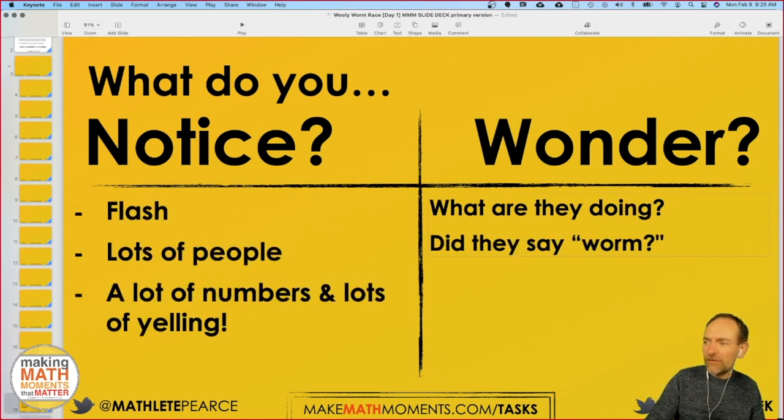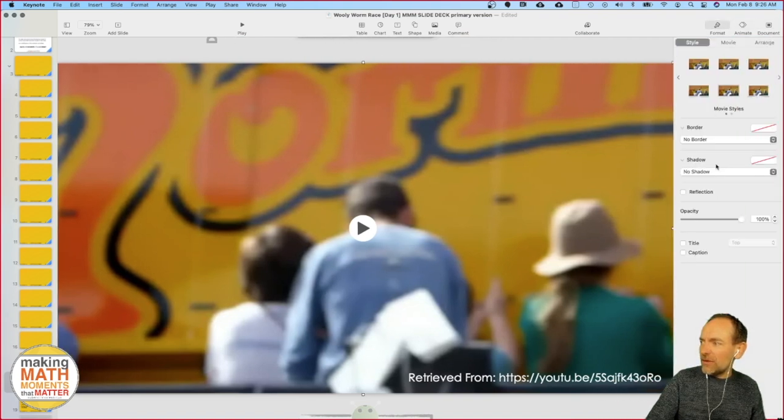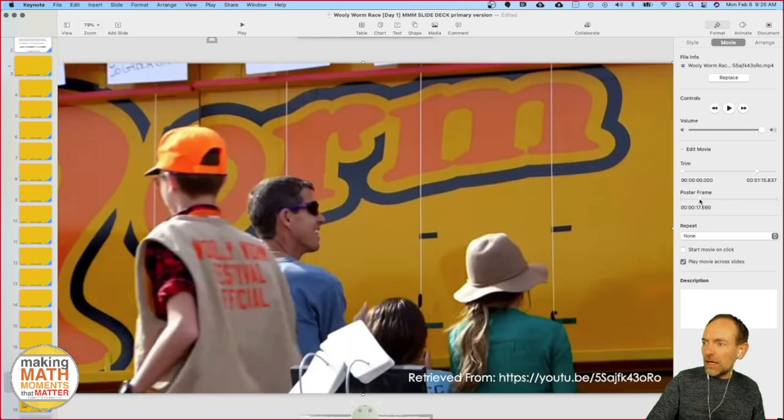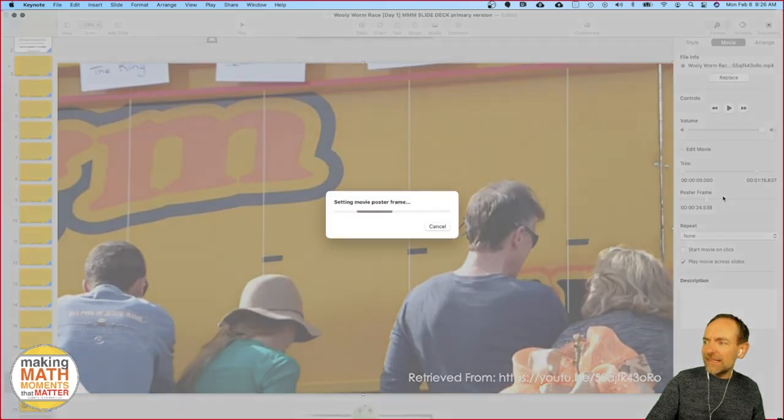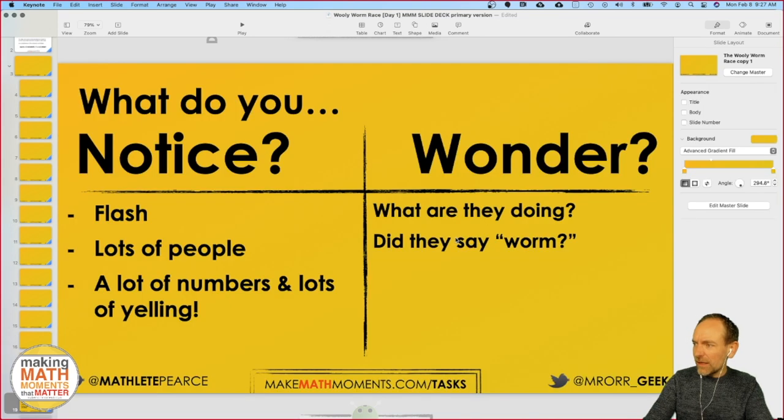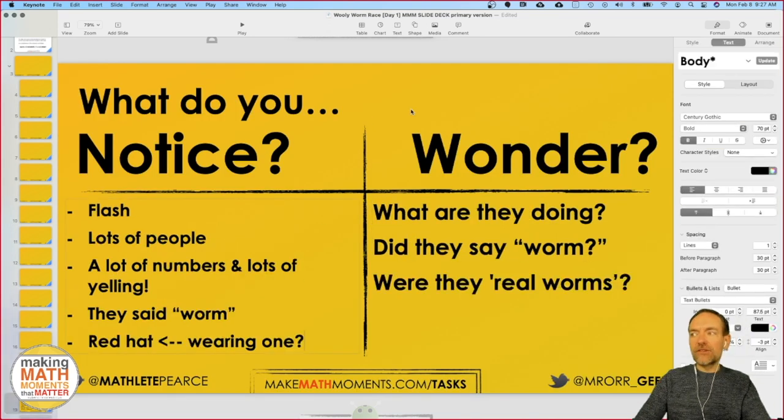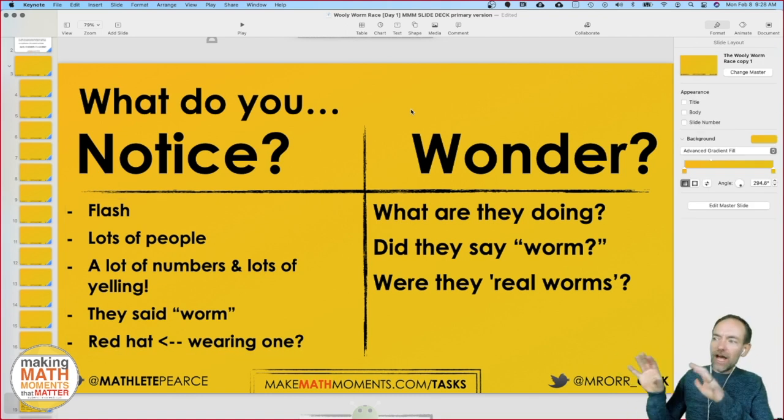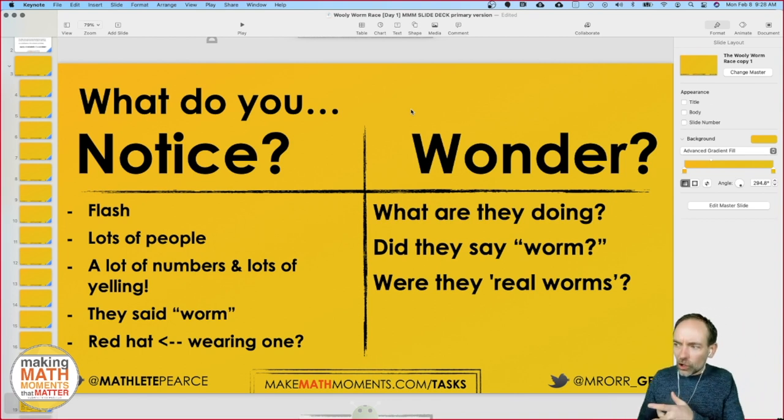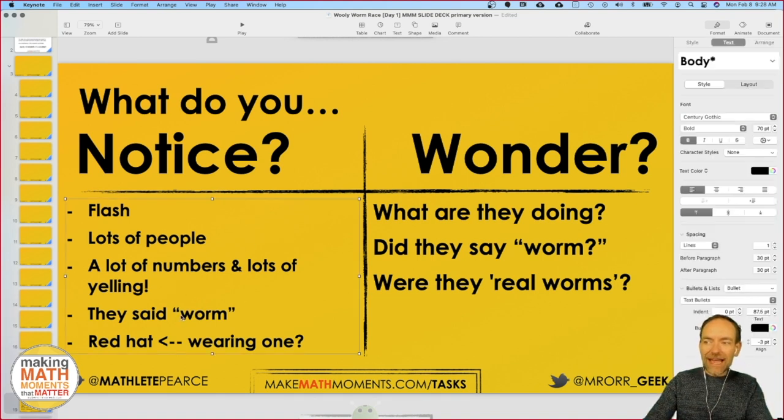Here's like a screenshot of part of it. Let me just kind of buffer along here. Did anybody else catch, did they say the word worm? One of the questions that I heard was, what are they doing? Someone said, did they say worm? And are they real worms? I want to knock a few of these questions off the list right away. They did say the word worm. Actually to kind of elaborate on that, they said woolly worm.